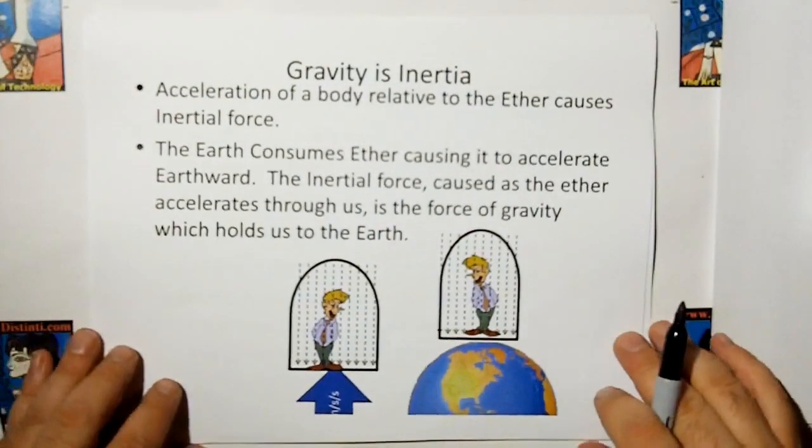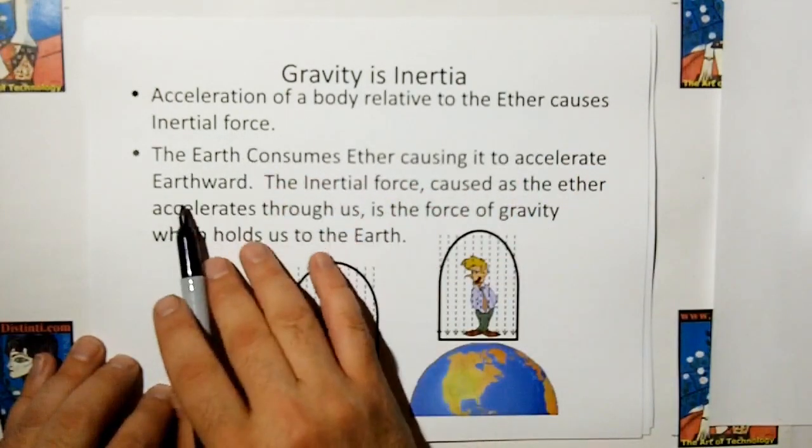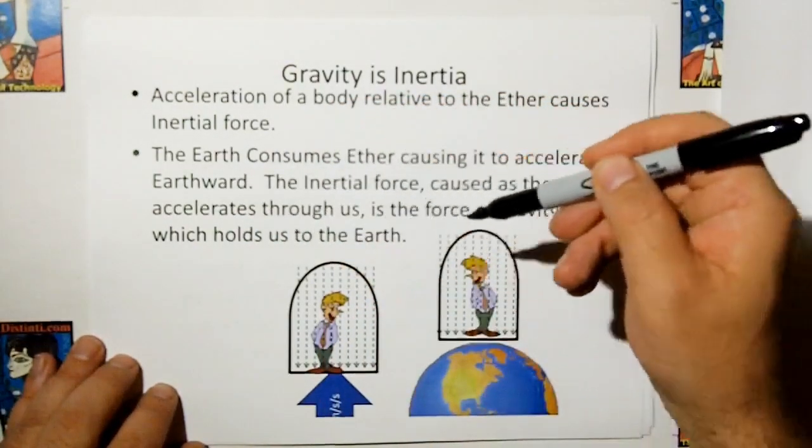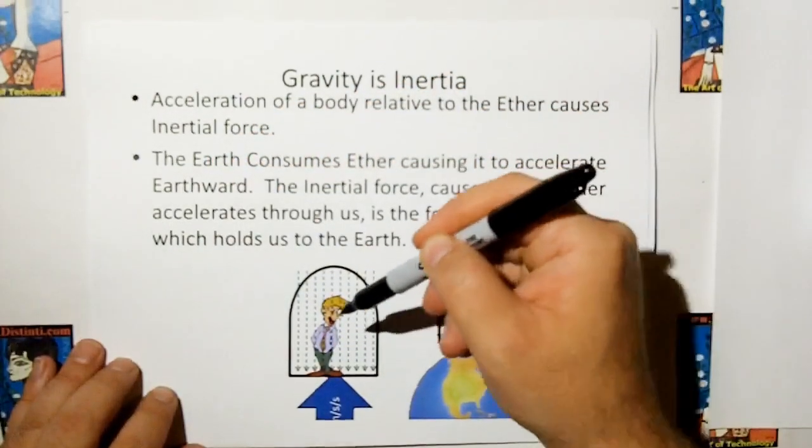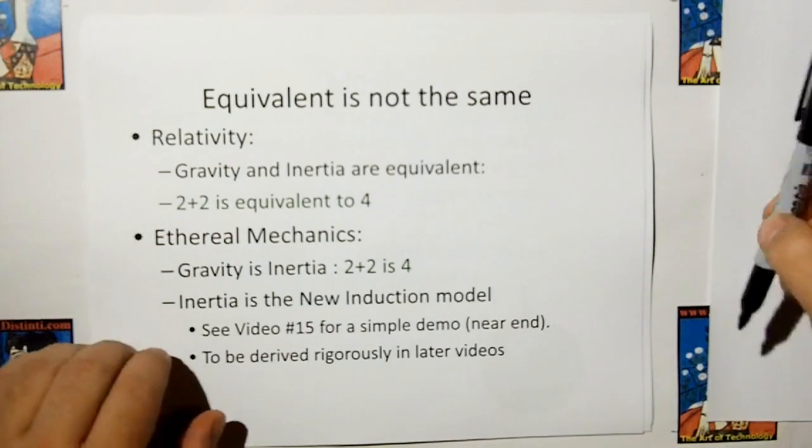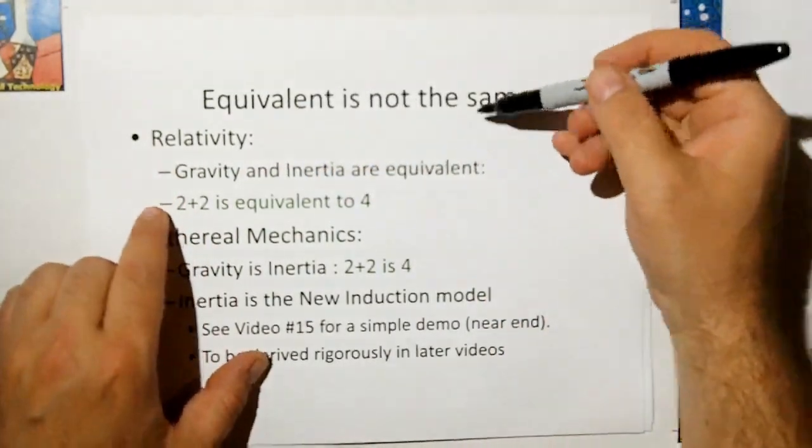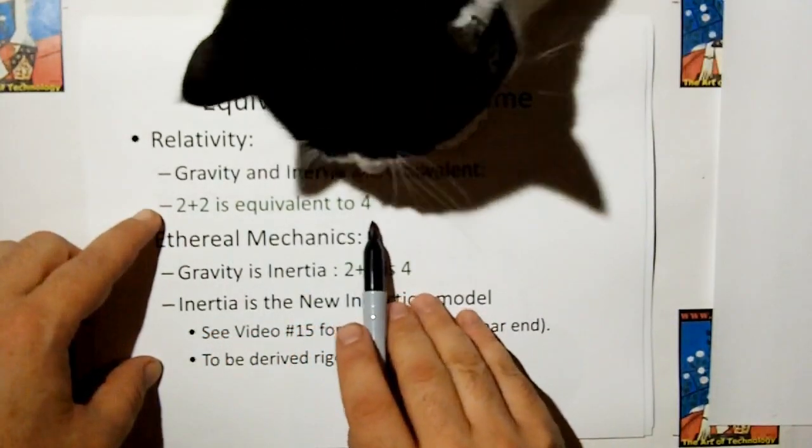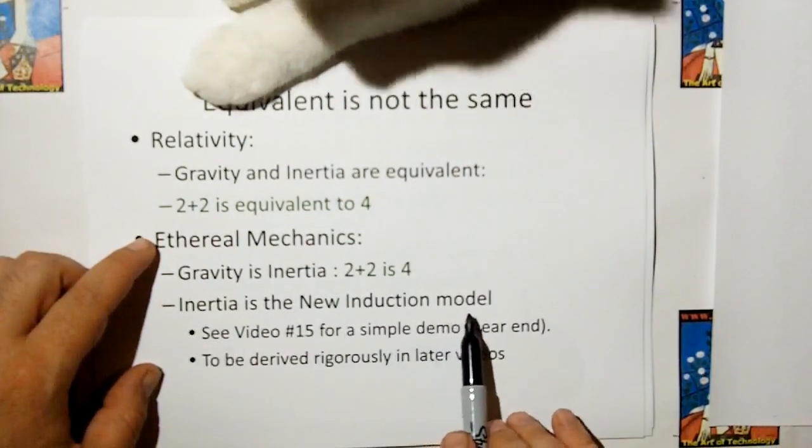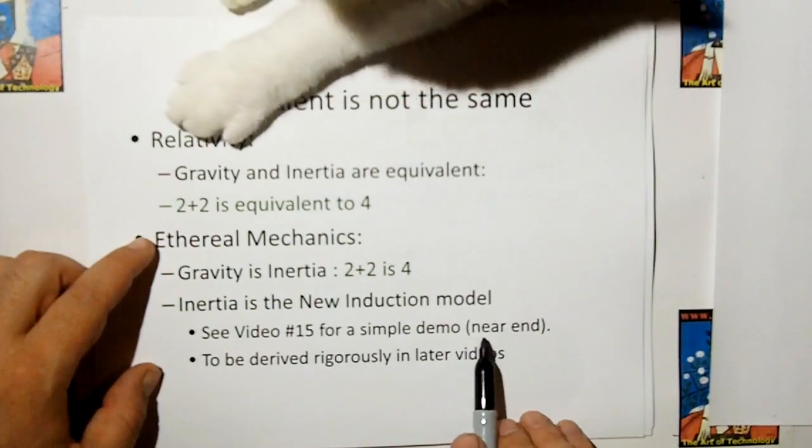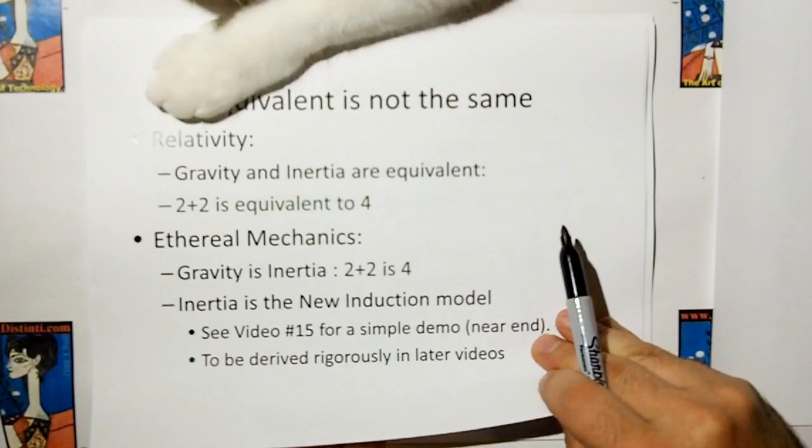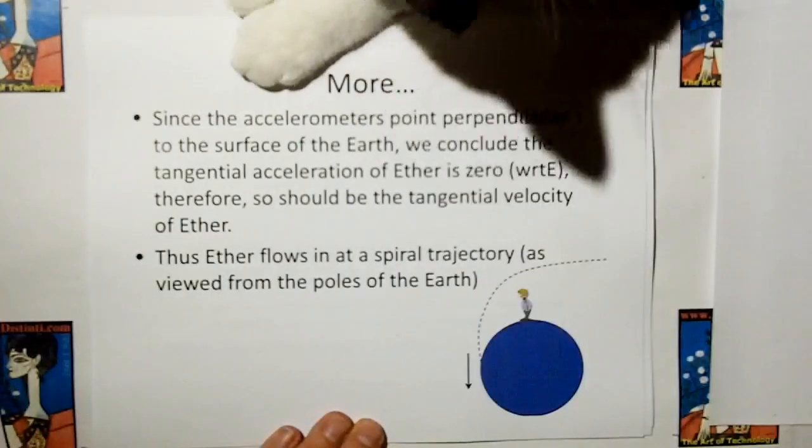Let's recap. Gravity is inertia. The acceleration of a body relative to the ether causes the inertial force, and if the Earth consumes ether, causing ether to accelerate earthward, then the inertial force caused as the ether accelerates through us, is the force of gravity which holds us to the Earth. It's also the force of inertia which holds us to the bottom of the spaceship. But we have to remember something. Equivalent is not the same. In relativity, Einstein says that gravity and inertia are equivalent. That's like saying 2 plus 2 is equivalent to 4. In ethereal mechanics, we say gravity is inertia. 2 plus 2 is 4. Inertia is the new induction model shown previously. See video number 15 for a simple demo near the end. But we're going to derive the inertia and gravity and all that more rigorously after we cover the electromagnetic part of ethereal mechanics.